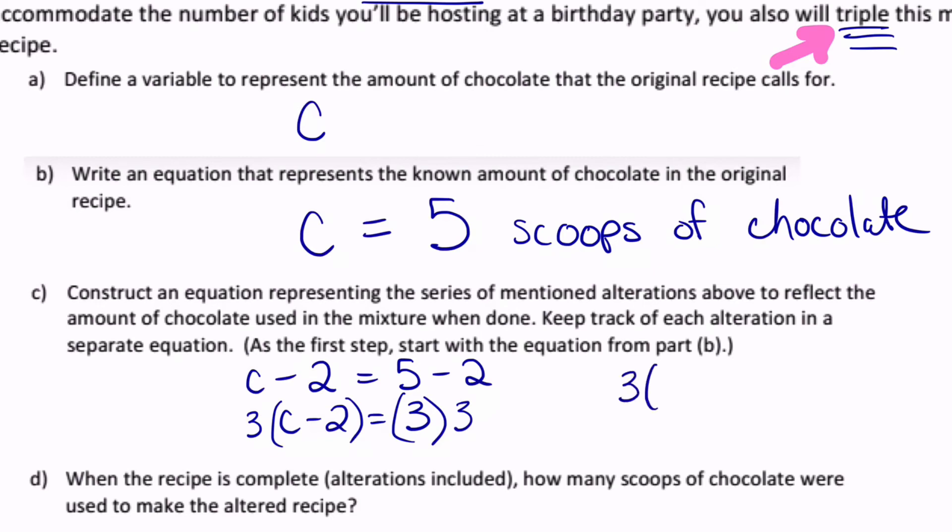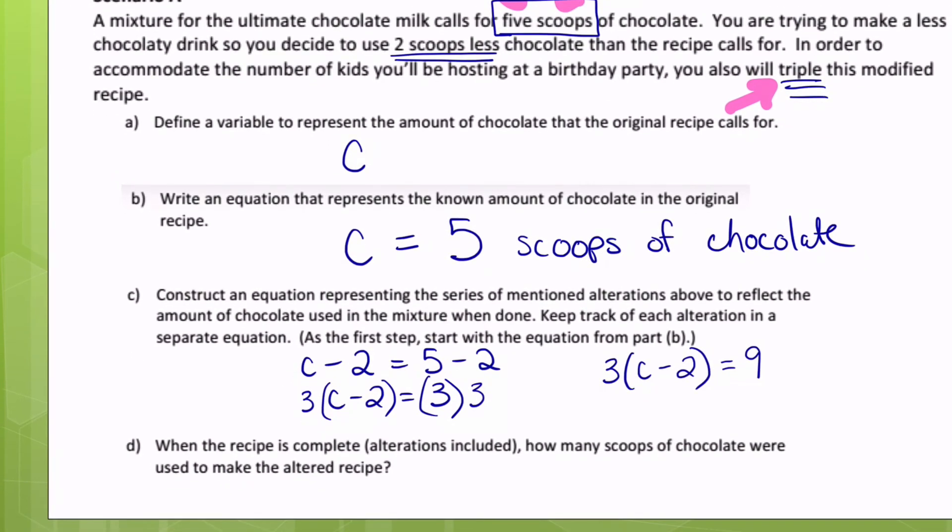which is going to leave me with, when I simplify the right side, three times the quantity of C minus two, which equals nine. This means that I am using nine scoops of chocolate in order to make the altered recipe.